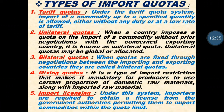As we know, after the 1991 policy the license system was totally abolished except for five industries — the license system is not applicable to all industries. But import licensing is still applicable for some industries. So import licensing means that importers or producers who want to import raw material or commodities from other nations must first take a permission — an import license — from the government, and only after obtaining that license can they import that commodity.